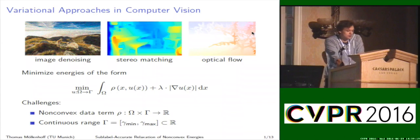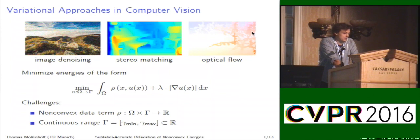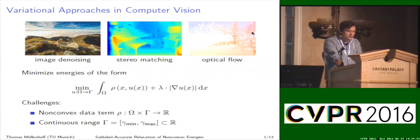Why is this interesting and why are these problems challenging? Many problems in computer vision follow this form, and the challenge is the non-convexity of this problem. Due to the non-convex data term, this is a non-convex optimization problem, and these are quite tough to solve. One option is to use classical methods such as gradient descent or linearization methods in a coarse-to-fine scheme to optimize these energies. But the problem there is that one only gets local optima, is dependent on the initialization, and one often has many unintuitive parameters.